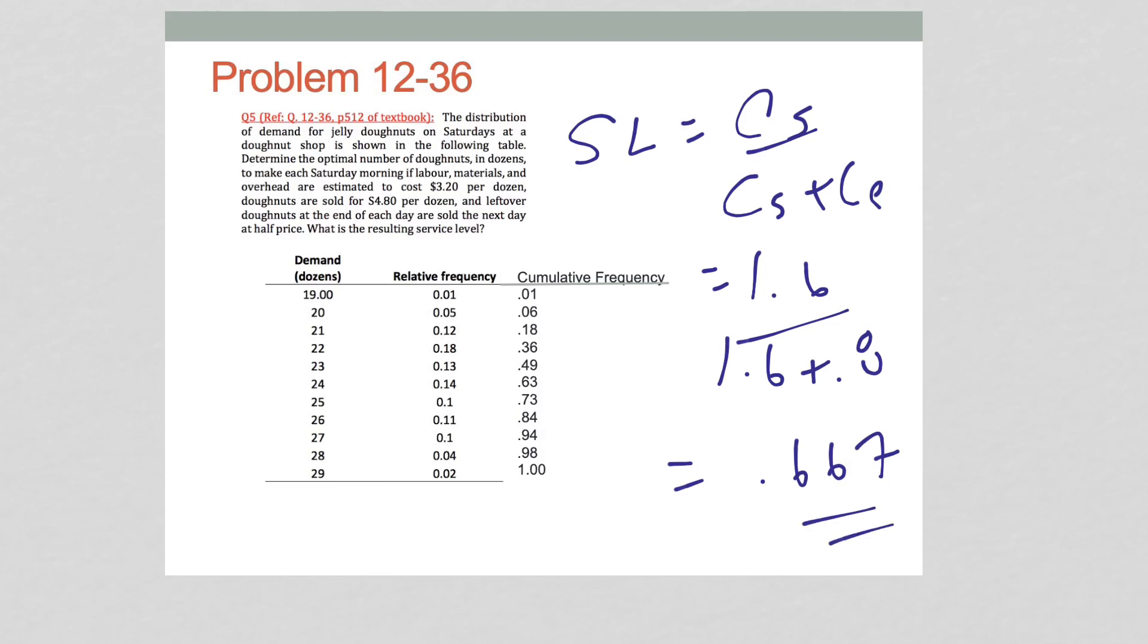Then what we do, in order to answer the question, the optimal number of donuts, the answer is the probability that just exceeds this service level we calculated. Look at this. We've got 0.63 does not quite exceed 0.667. 0.73 does, which means that is the first probability that just exceeds this number. Therefore, the answer is 25 is the optimal number of donuts.